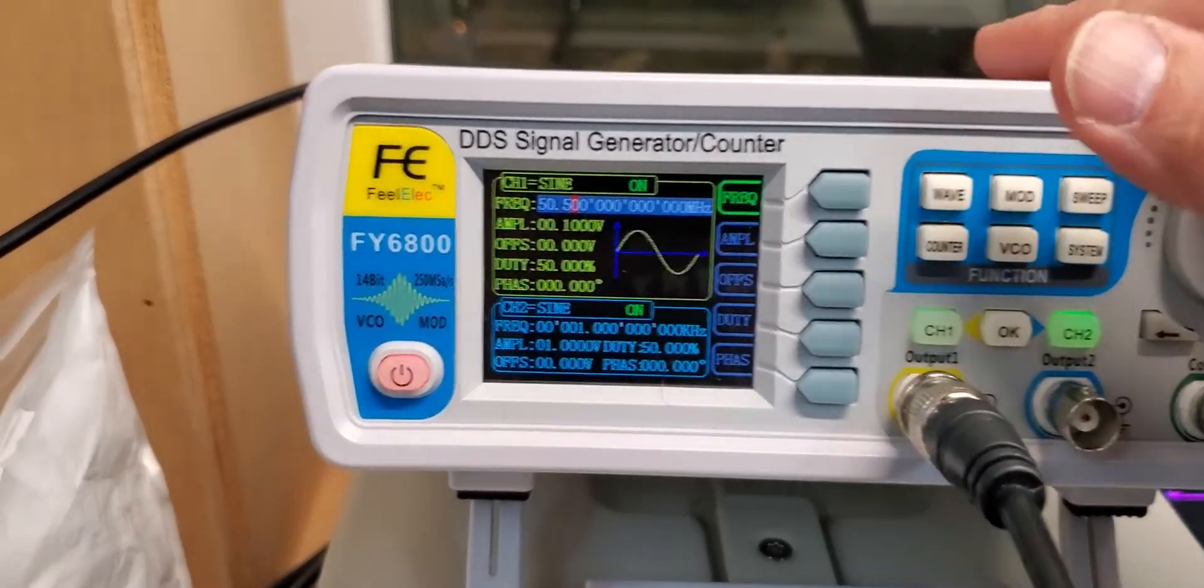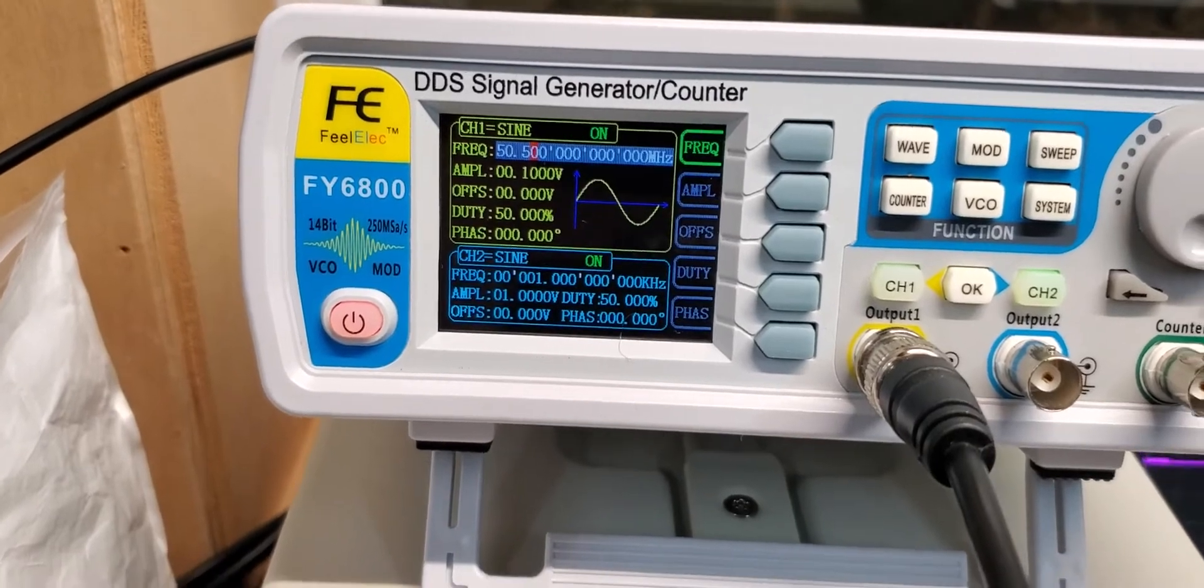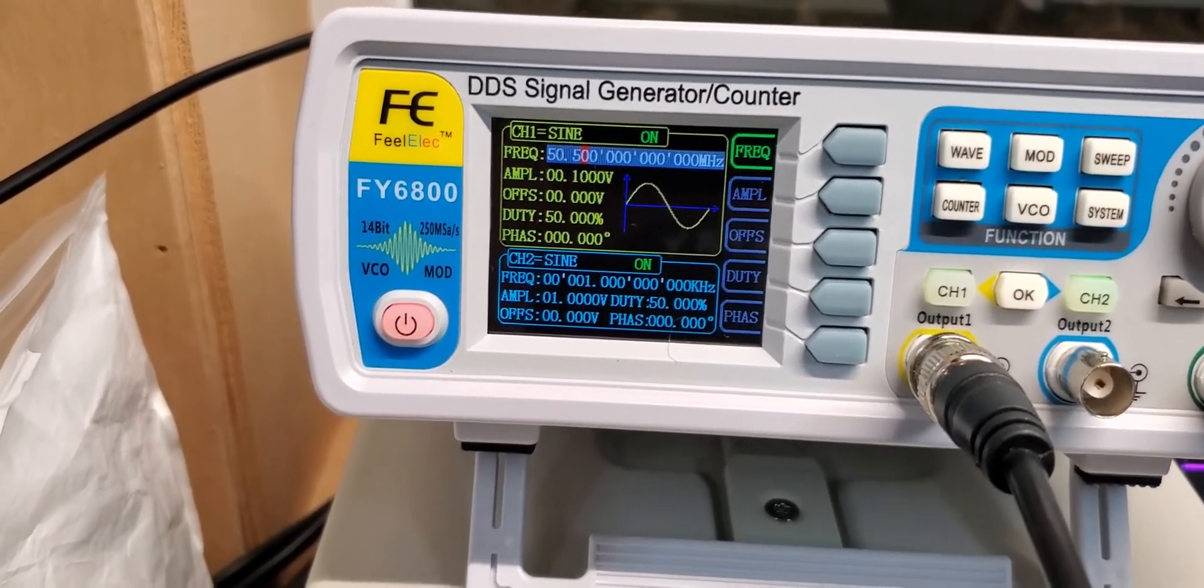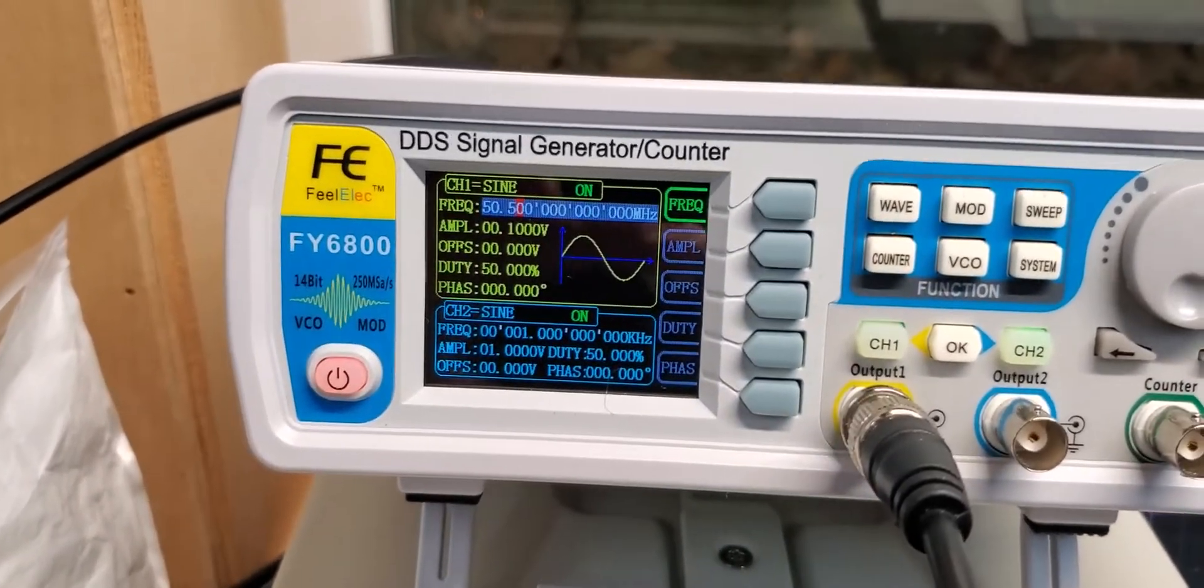So if you're in a pinch you have a signal generator you can have a transmitter. And of course be sure that your license allows you to transmit on the frequencies that you're transmitting on.